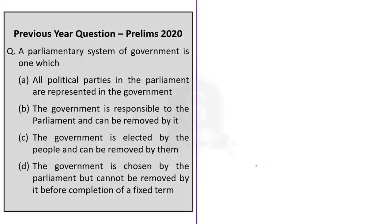Let us discuss the options. Option A is wrong — not all political parties in parliament are represented in government; for example, Congress members are not ministers in today's government. Option C is partially correct — the government is elected by the people, but the second part saying it can be removed by them is wrong; that happens only in direct democracy. India uses representative democracy where government continues as long as it has parliamentary support. Option C is eliminated.